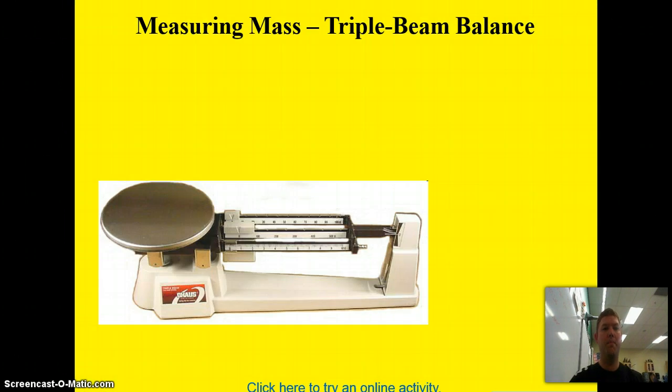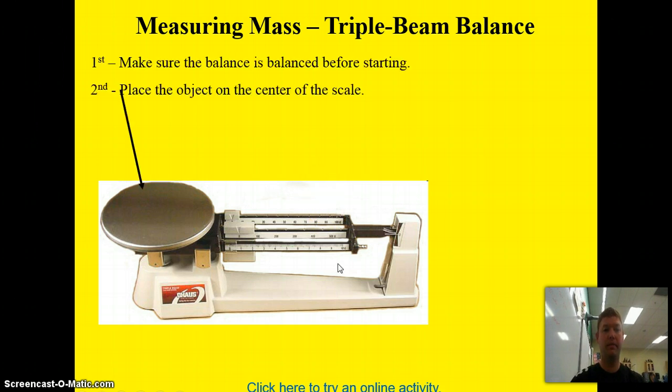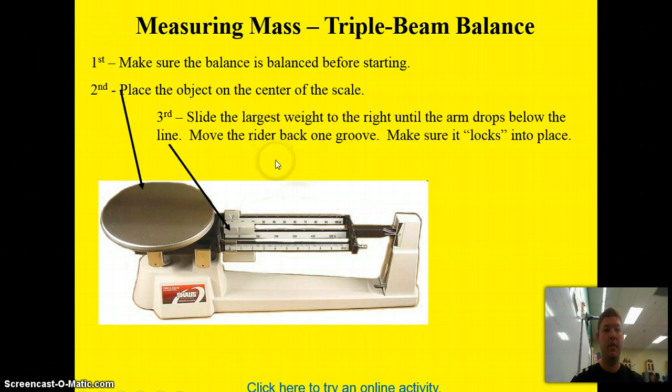So, how do we measure mass? Measuring mass, we use a triple beam balance, and this is the triple beam balance. The first thing you do is you make sure the balance is balanced before starting. Second, you place the object on the tray in the center of the scale. Third, you start to slide the largest weight, which is in the center, to the right until the arm drops below the line over here.